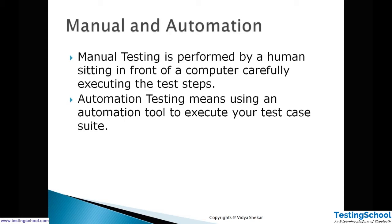In manual testing, a test engineer sits in front of the computer and executes test scripts. The input required is test cases written manually. By looking at each test case, the engineer executes every step. There are two criteria: actual value and expected value. When both match, we say the test step is passed. The actual value is what we see on the application, and the expected value is what is written in the test case.